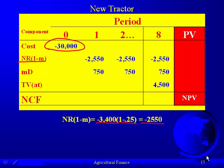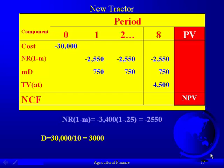The after-tax net returns in this case is negative because we've omitted the revenues — we're just looking at the cost. So we can say that the after-tax cost of operating this new tractor is $2,550 per year.